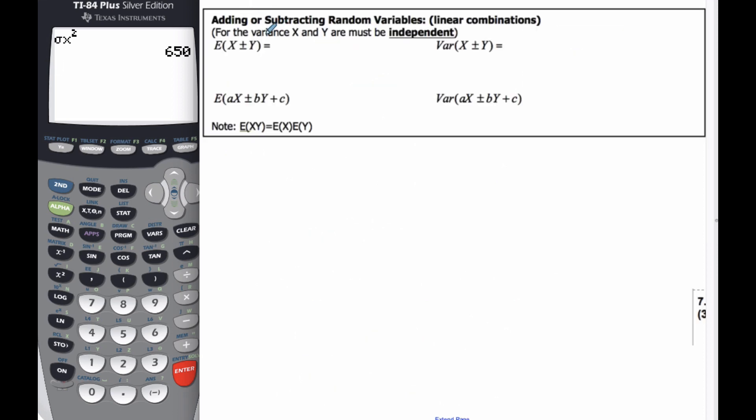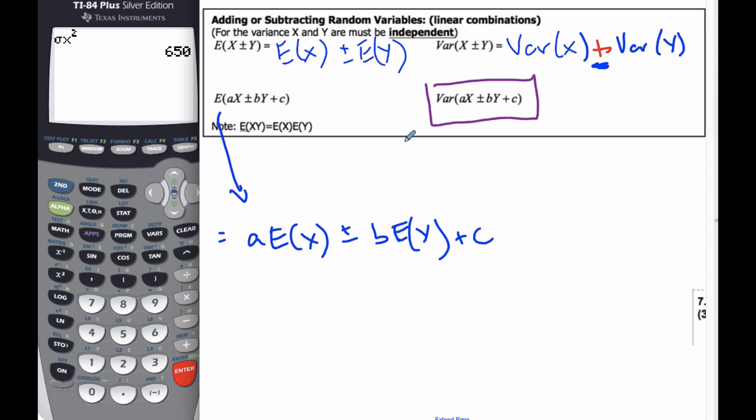So to summarize, expectation becomes expectation of X plus or minus the expectation of Y. But the variance becomes the variance of X. If I add or subtract, it always becomes adding the variance of Y. This is so key. It's always adding no matter what. For expectation of this scenario, expectation, it becomes A expected value of X plus or minus B expected value of Y plus C. The expectation is intuitively just like regular algebra. And then finally, the variance, again, this is the one that's the hardest, I think.